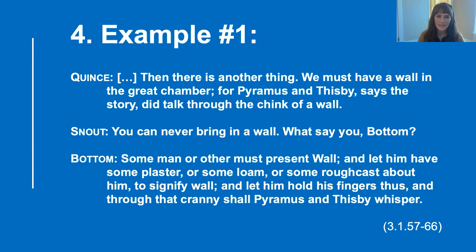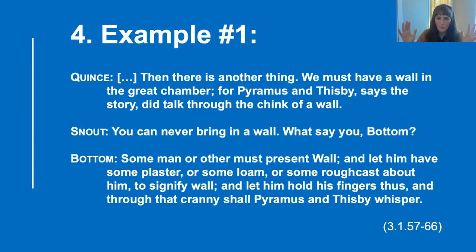These are three of the characters — Quince, Snout, and Bottom — and we're dropping into the middle of the dialogue. Quince says: 'Then there is another thing. We must have a wall in the great chamber, for Pyramus and Thisbe, says the story, did talk through the chink of a wall. You can never bring in a wall. What say you, Bottom?' Bottom says: 'Some man or other must present wall, and let him have some plaster or some loam or some rough cast about him to signify wall. And let him hold his fingers thus, and through that cranny shall Pyramus and Thisbe whisper.'